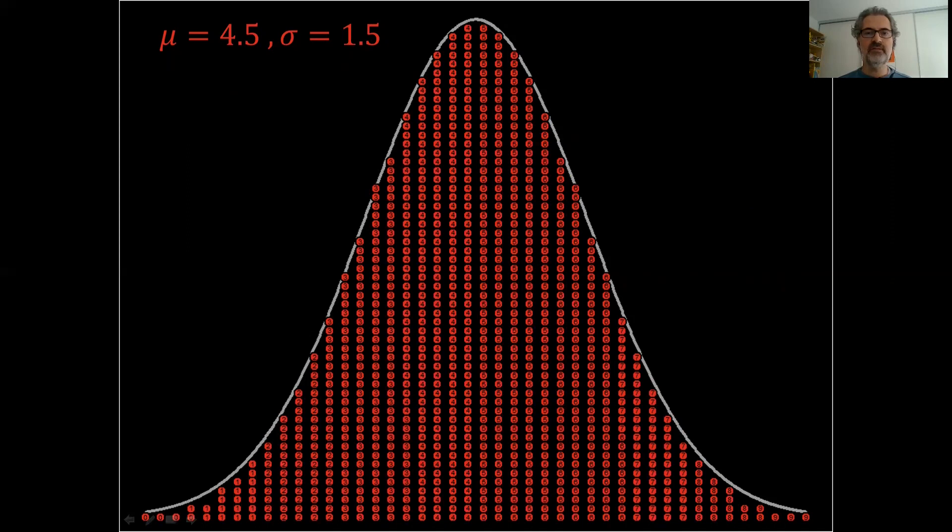So here is our population of normally distributed values. And the first sample with size 8 that I showed you before are these individuals. And the mean for them is equal to 5 and their standard deviation is 2.1. I'm not making up these numbers. They're the actual mean and standard deviation of these sampled values.